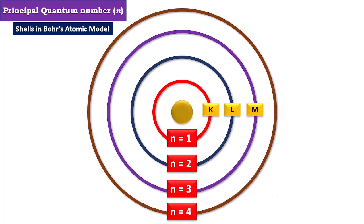And the fourth one, having principal quantum number 4, we call the N shell. So these are different types of shells present in atomic models.